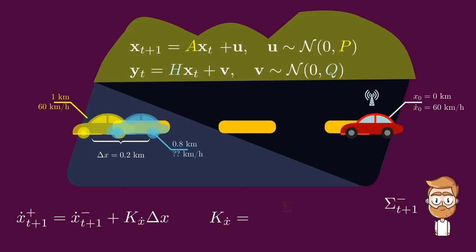You look at a Kalman coefficient that is very similar to what we had before, except that now the numerator is replaced by the off-diagonal term sigma x x dot, which represents the correlation between speed and position. And this makes sense. This is the term you want to use to convert an information about the position to an information about the speed.